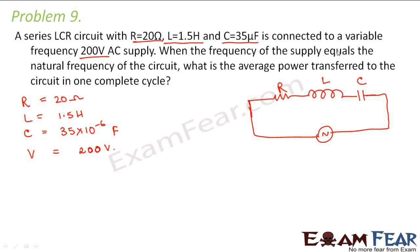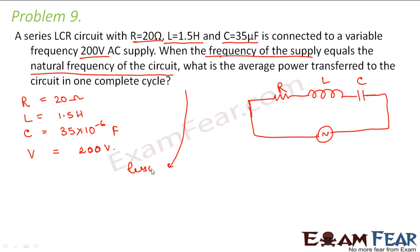When the frequency of the supply equals the natural frequency of the circuit, what is the average power transferred to the circuit in one complete cycle? When the frequency of supply equals the natural frequency, resonance occurs. At resonance, the capacitive reactance and the inductive reactance become equal and cancel each other out.